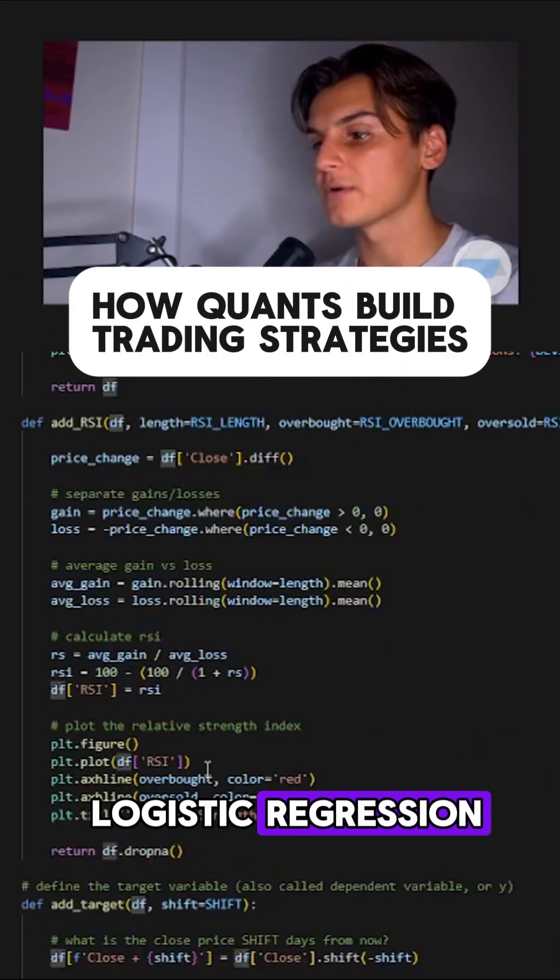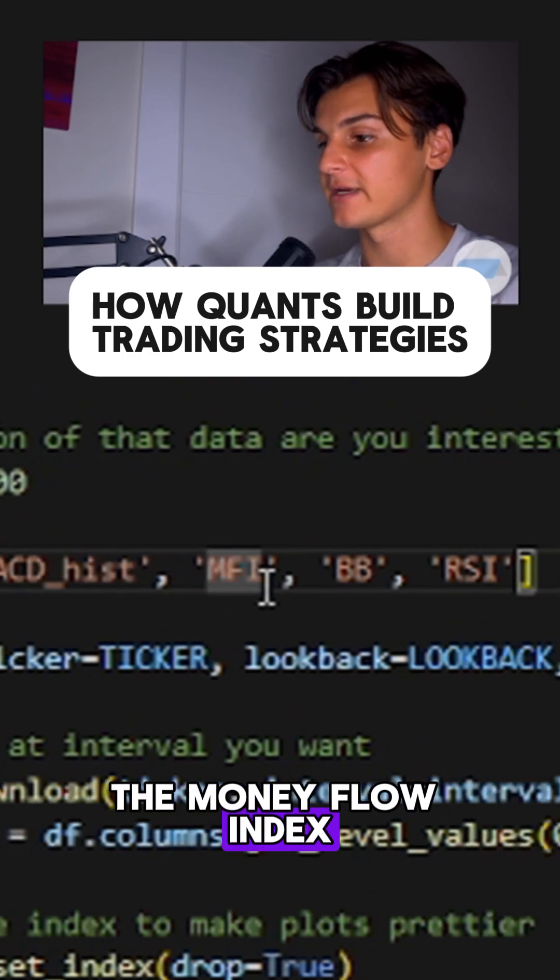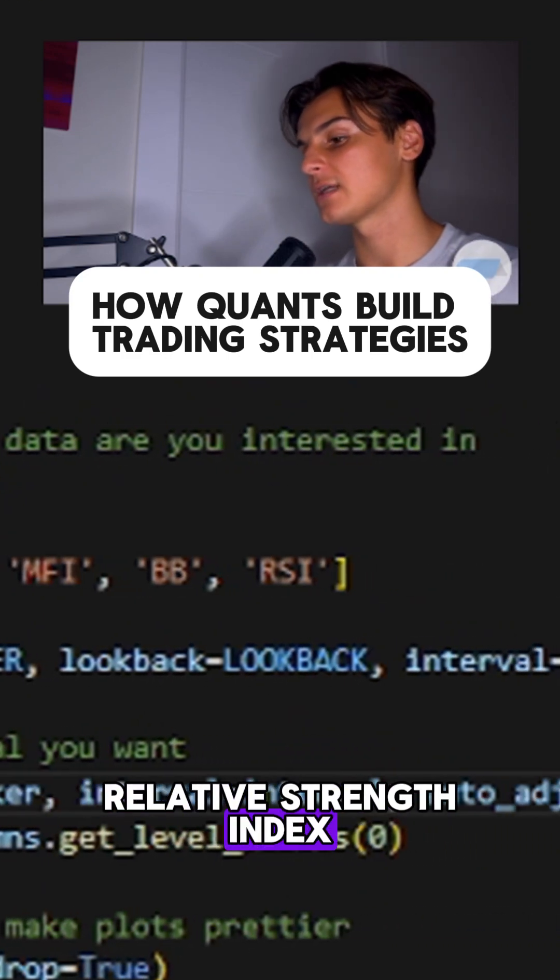So now we're going to be running a logistic regression model on the MACD histogram, the money flow index, Bollinger Bands, and the relative strength index.